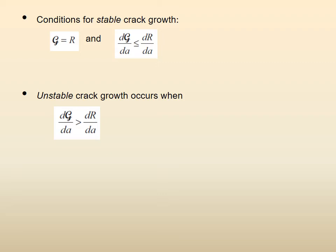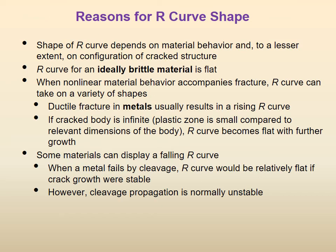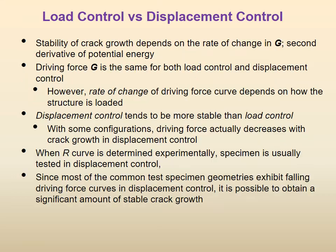We told you the conditions for stable crack growth and the condition for unstable crack growth, which are basically in terms of the rate of change of G with respect to a — the crack size. We covered the reasons for the R curve shape, including ideally brittle materials and metals with ductility. We also introduced the topic of load control versus displacement control.